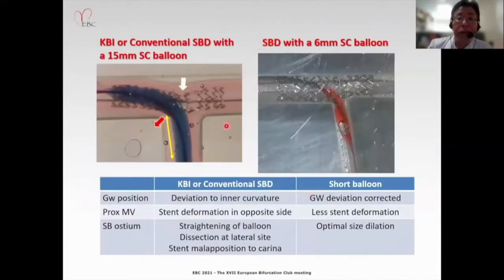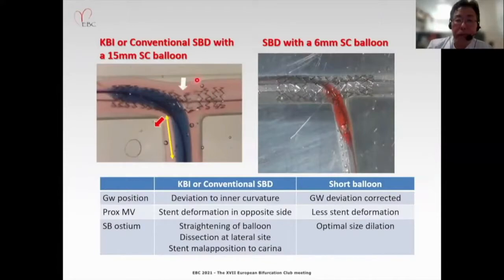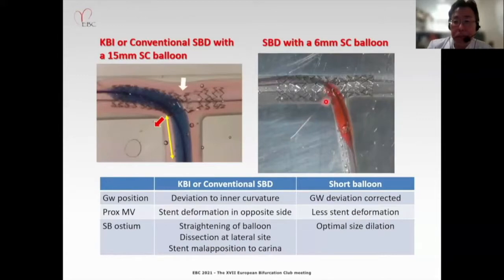In bench testing comparing conventional side branch dilation by a long balloon versus a short balloon: with the conventional approach, guide wire deviation to the inner side at the side branch ostium is maintained during balloon inflation, and stent deformation on the opposite side of the side branch is likely to occur due to balloon straightening. Side branch dissection and stent malapposition at the cardinal side are also likely. On the contrary, side branch dilation with a short balloon can correct guide wire deviation and provide optimal side branch ostium dilation with less stent deformation and side branch injury.